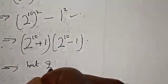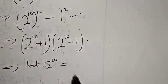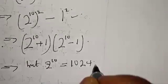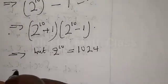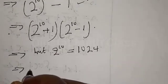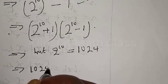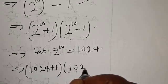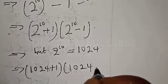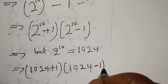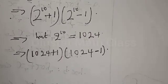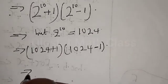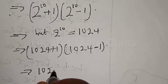Now, 2 raised to power 10 equals 1024. This implies that we have 1024 plus 1 into 1024 minus 1. Then 1024 plus 1 is 1025, so this implies that we have 1025 into 1023.